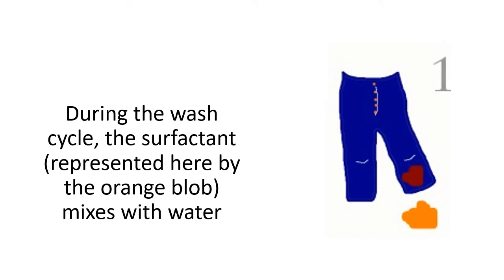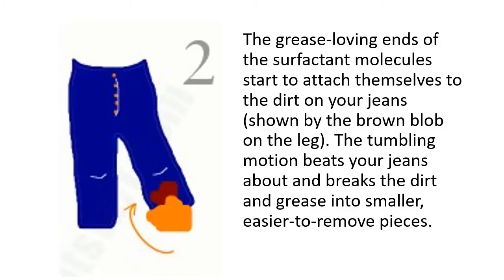During the washing process, the surfactant or detergent mixes with the water. This surfactant, mixed with the water, reaches the oily substance. The surfactant has two ends: one attaches to the oily part and the other attaches to the water. The grease-loving end of the surfactant molecules attaches to the dirt on your cloth, and since the detergent also contains water, the dirt breaks into smaller pieces.